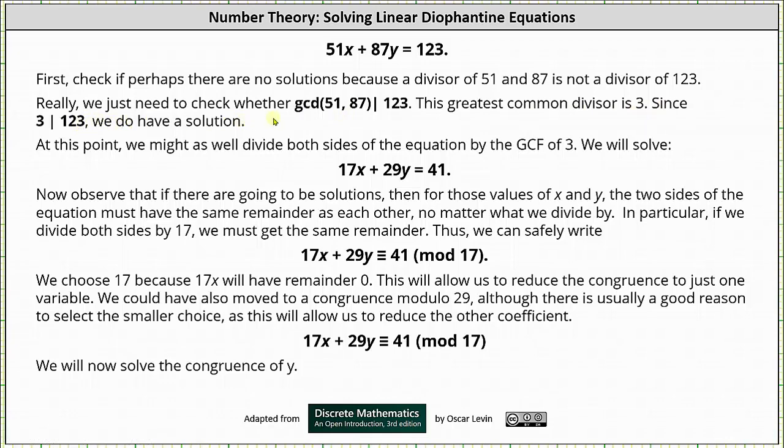At this point, we might as well divide both sides of the equation by 3 to simplify the equation. Dividing both sides by 3 gives us a simplified equation: 17x + 29y = 41.